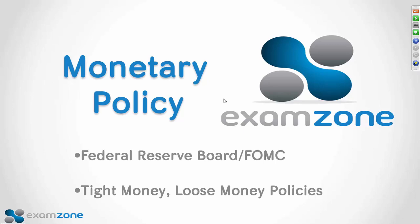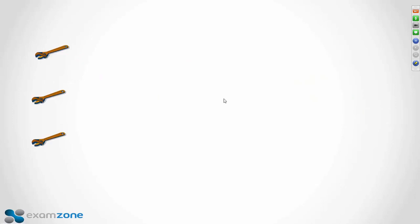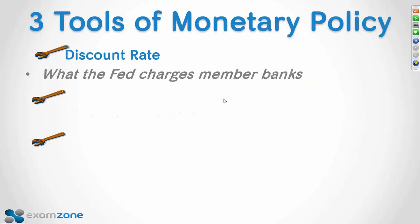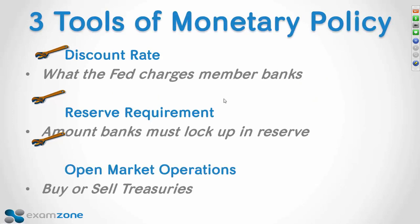When the economy goes into a downturn, the Fed can go the other way — lower interest rates, making it more attractive to buy a house or washer-dryer, which can stimulate the economy. The three tools of monetary policy are the discount rate, the reserve requirement, and the open market operations of the Fed.